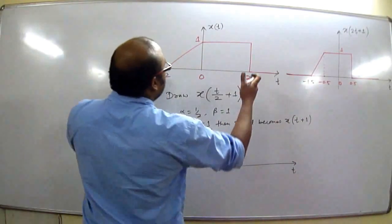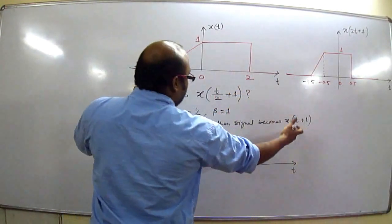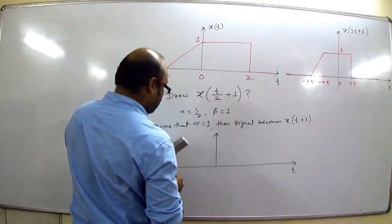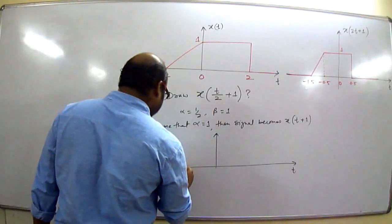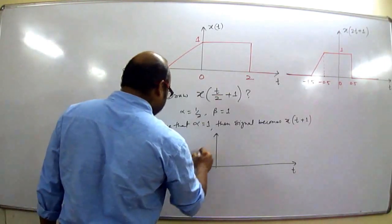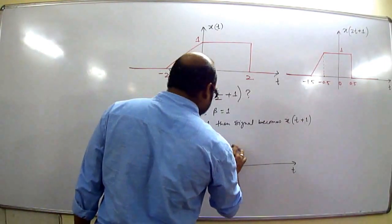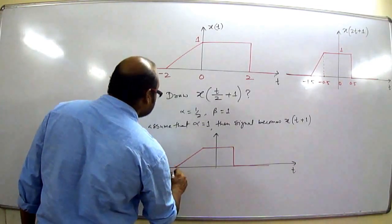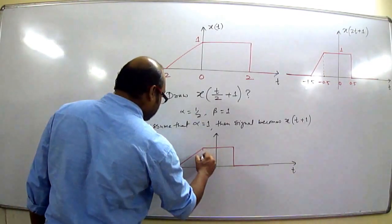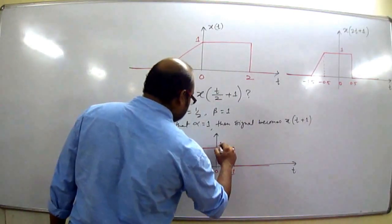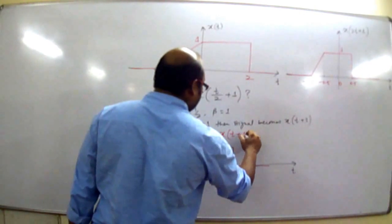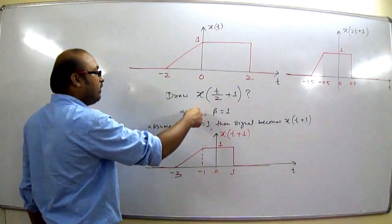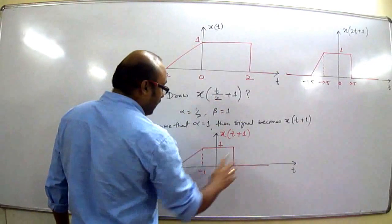We draw x(t + 1), which is simply the advanced version of x(t), by advancing x(t) by 1 second. This is x(t + 1). Now we have to draw x(t/2 + 1) from x(t + 1), so we will simply divide the original value of α in the time axis of x(t + 1).